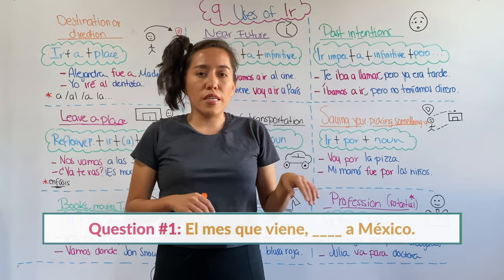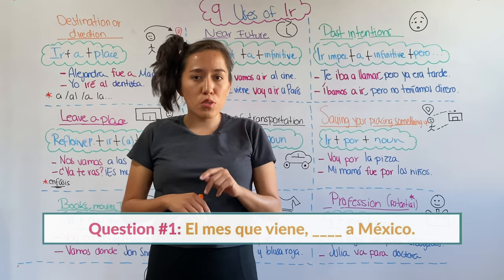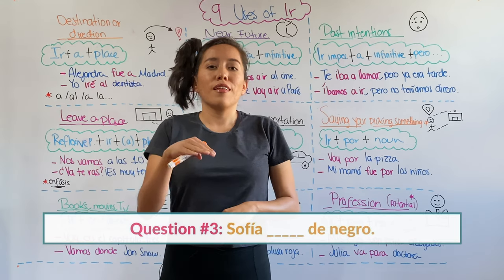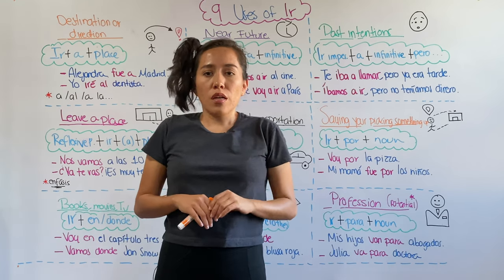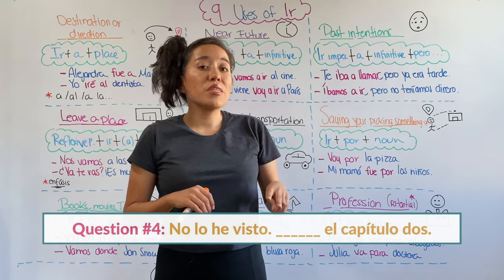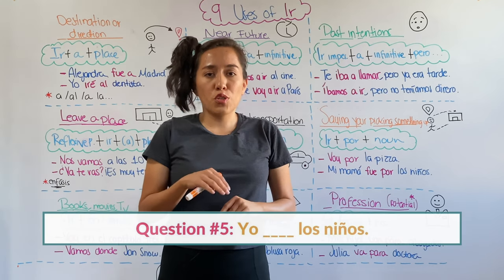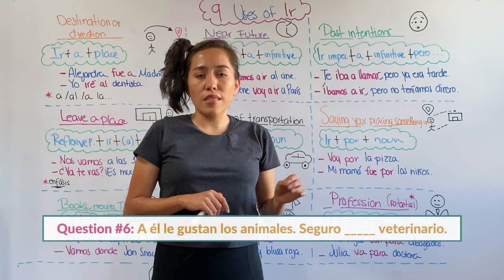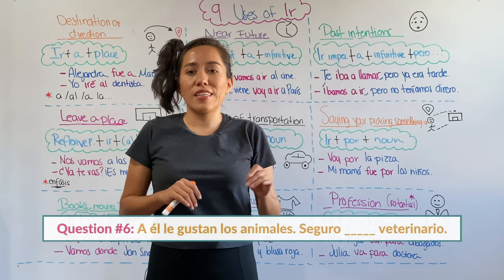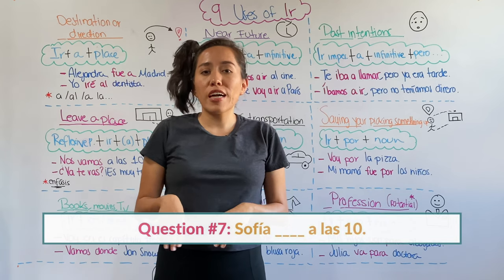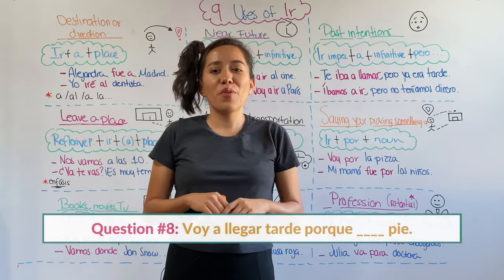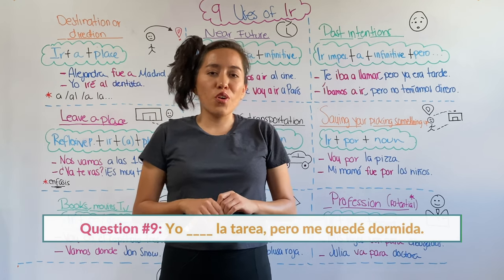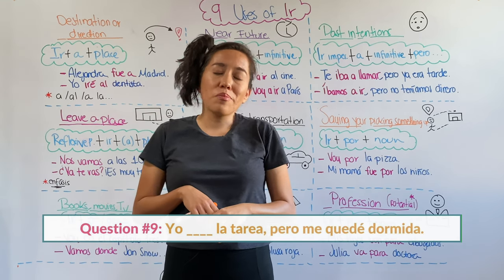Number one: el mes que viene, blank, a México. Number two: Juan, blank, supermercado. Number three: Sofía, blank, de negro. Number four: no lo he visto, blank, el capítulo dos. Number five: yo, blank, los niños. Number six: a él le gustan los animales, seguro, blank, veterinario. Number seven: Sofía, blank, a las diez. Number eight: voy a llegar tarde porque, blank, pie. Number nine: yo, blank, la tarea, pero me quedé dormida.